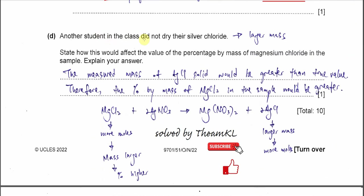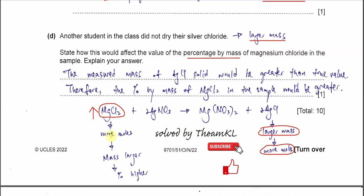Part D: another student did not dry their silver chloride. If the silver chloride is not dry, it contains water, so the mass will be larger than it should be. This means the calculated moles of AgCl will be higher, the moles of MgCl₂ will also be higher, the calculated mass of MgCl₂ will be larger, and therefore the percentage by mass of magnesium chloride in the sample will be greater than the true value.